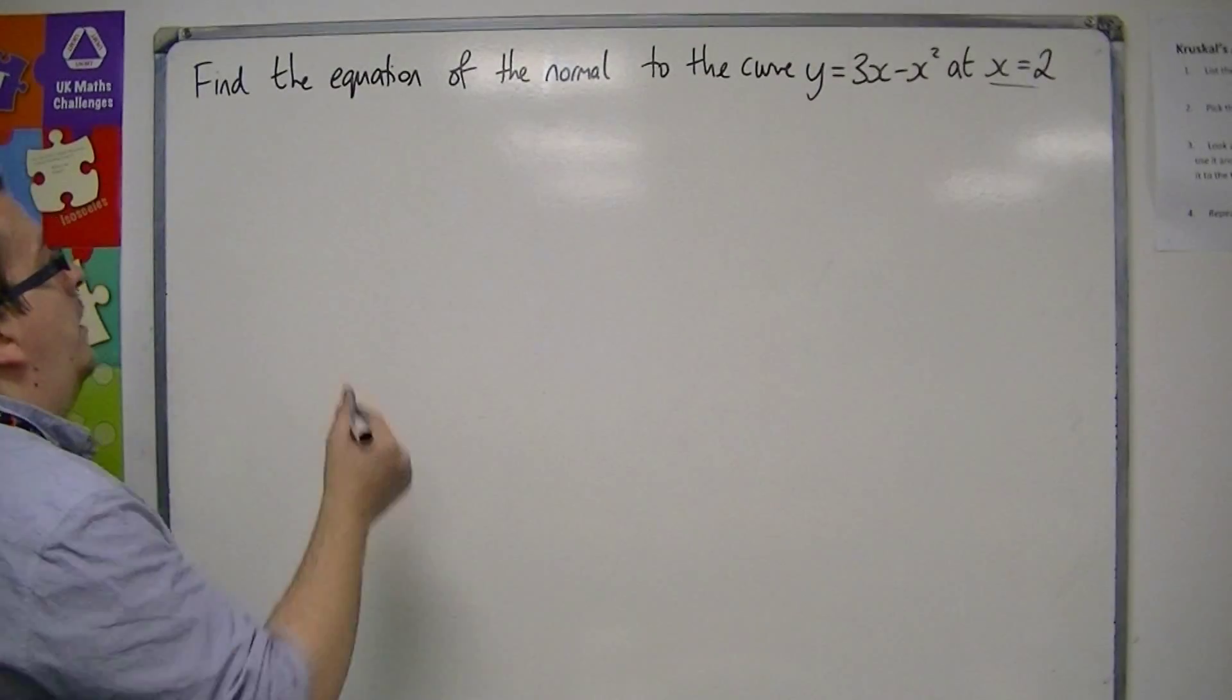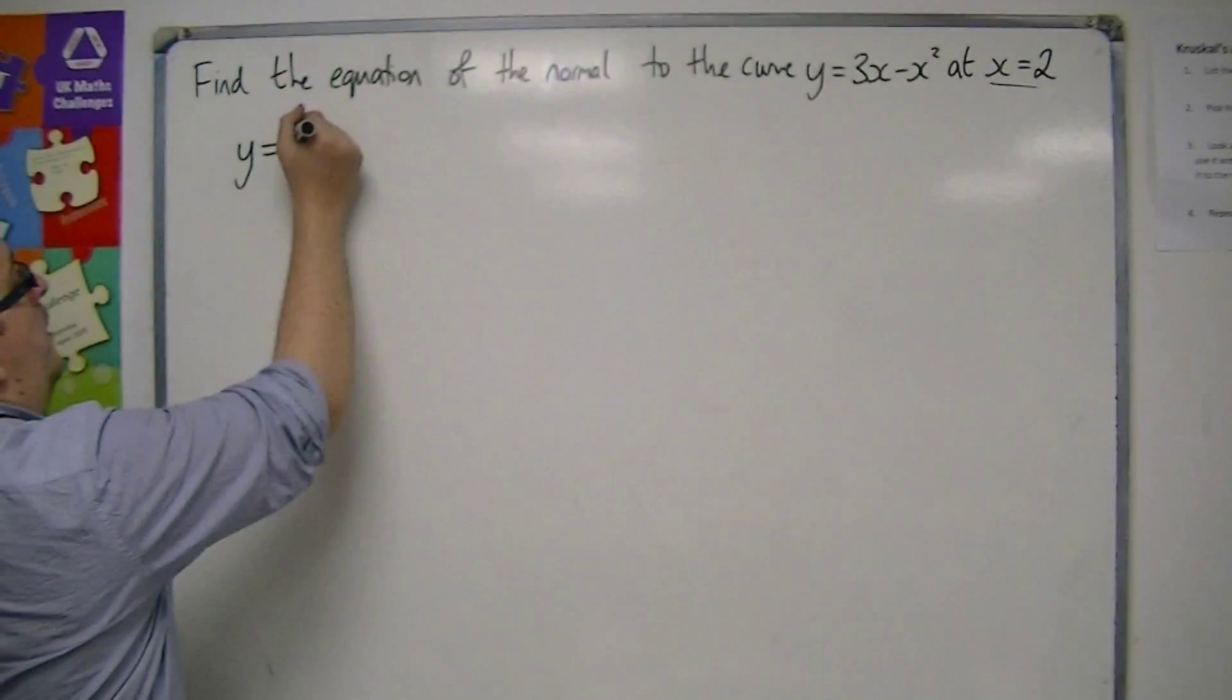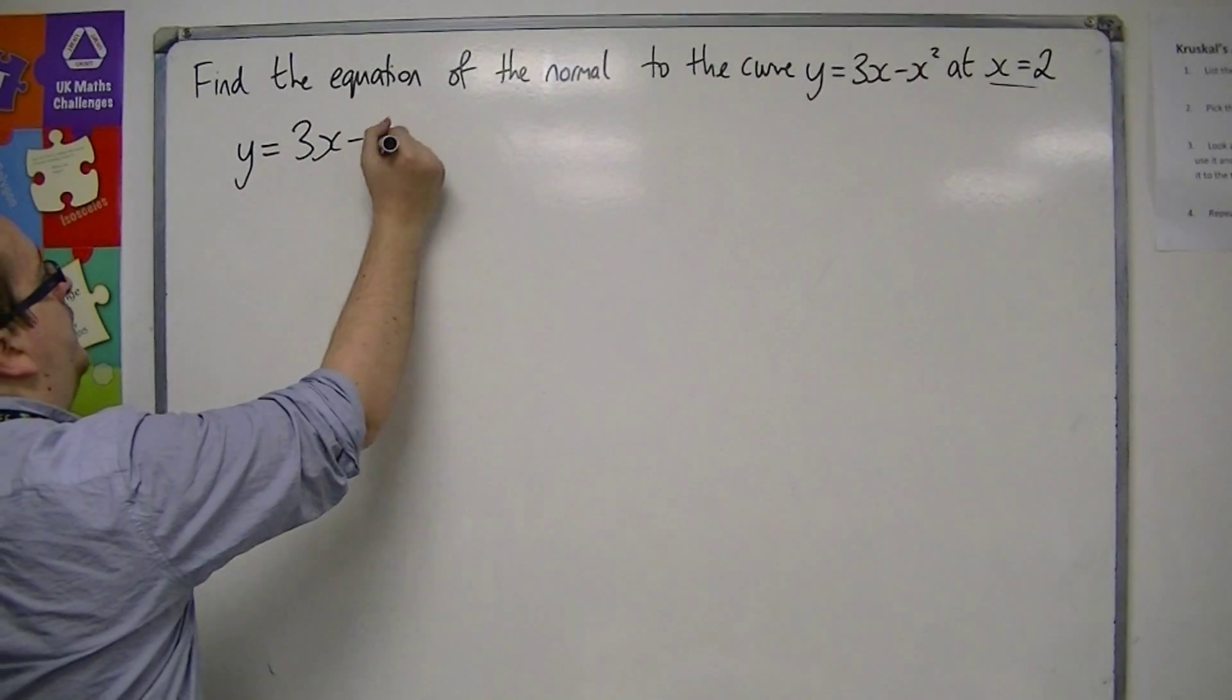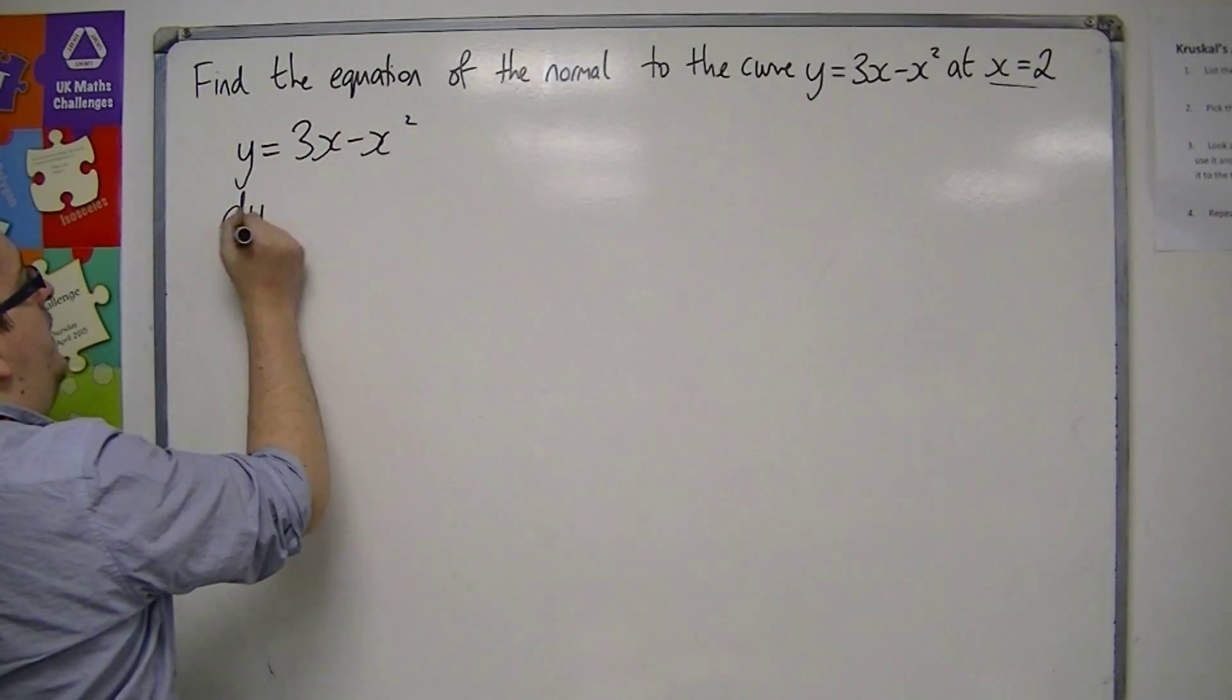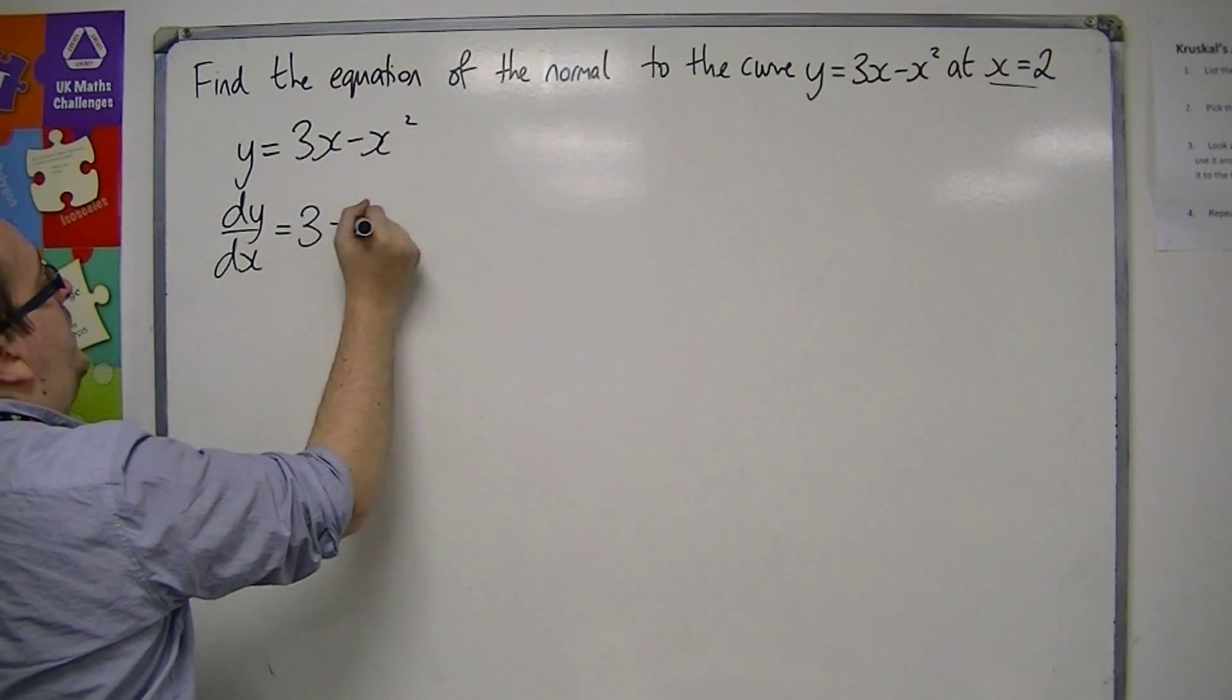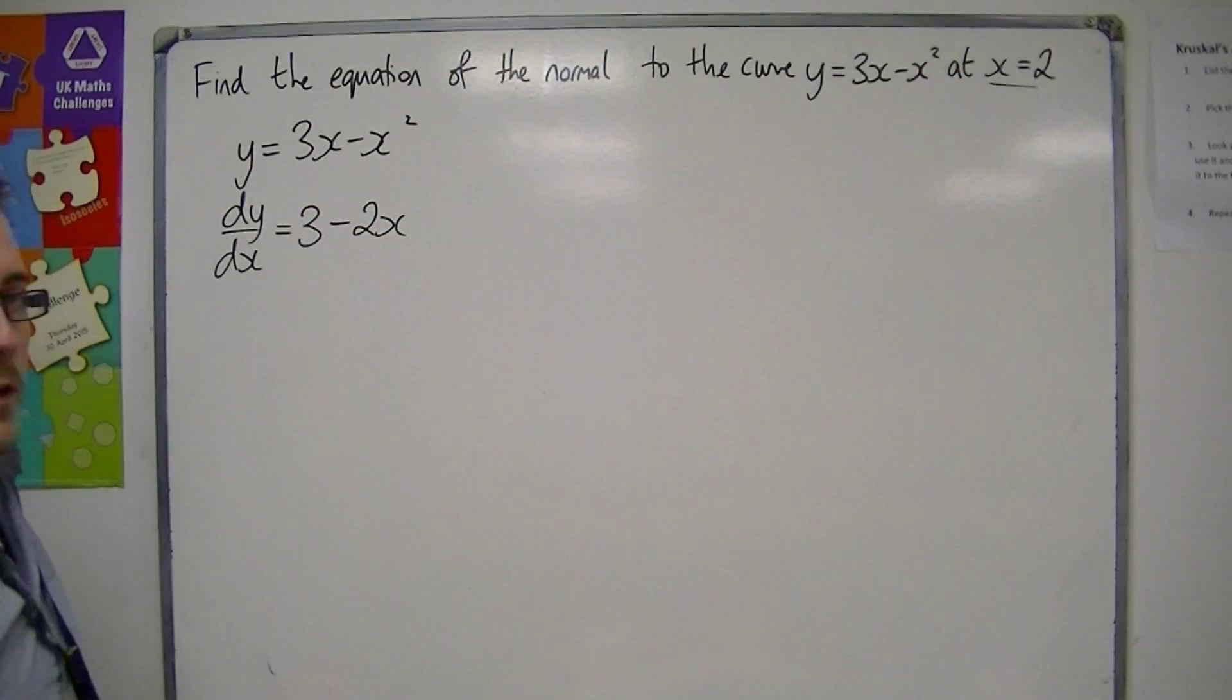So first of all, I differentiate. I'm going to write down the function first. So I'm going to differentiate that, and that gets me 3 take away 2x.